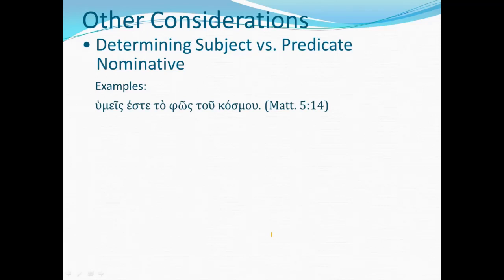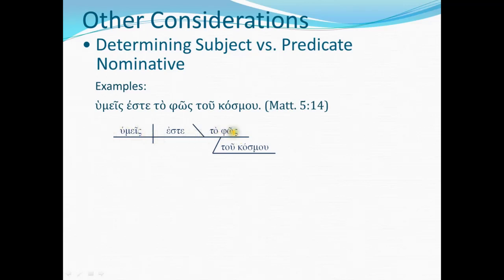You are the light of the world — another example. The pronoun humeis is the subject — that's the mechanical guidance. Logically, Jesus is saying something about you people; the light of the world is the new information. He's talking about his disciples — they're the known information referred to in the pronoun you. Whether you take Wallace's approach or mine, humeis is the subject and to phos is the predicate. The mechanical guidance that the pronoun is usually the subject lines up with the logical guidance.